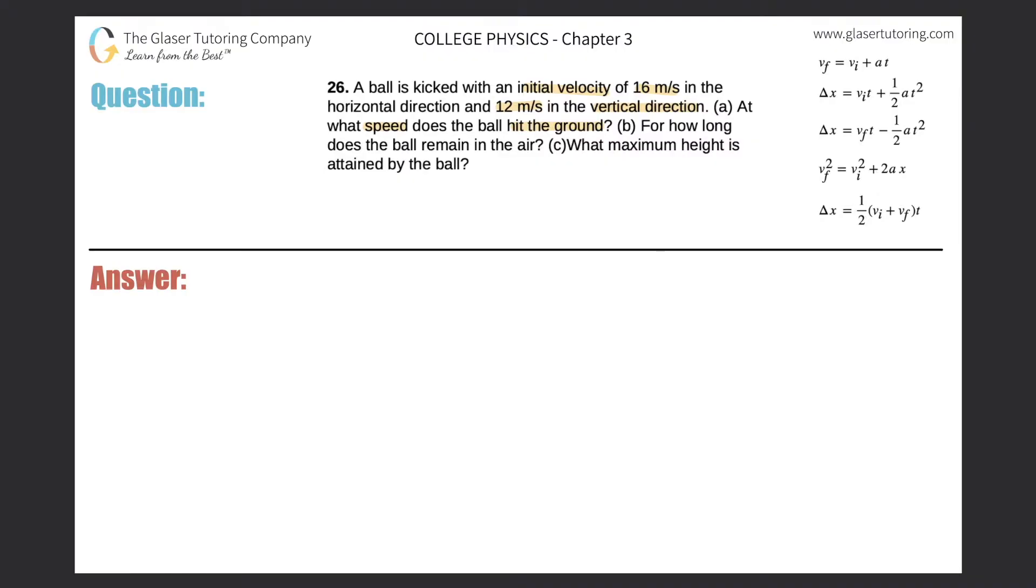Alright, so first let's take a look at that. We have a coordinate system with the y coordinate and the x coordinate. Now let's draw the x and y components of the vector. They said it's initially kicked with 16 meters per second horizontal direction, so let's represent that. This is going to be 16 meters per second. And then they said it's also launched in a vertical direction of 12 meters per second. That's going to look something like this, straight on up, and that'll be 12 meters per second.